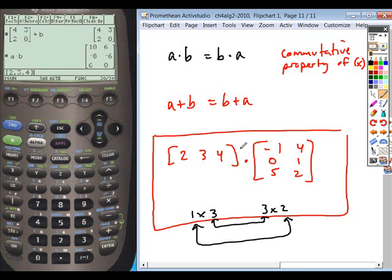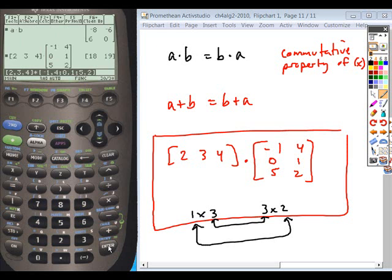Okay, so if we take 2, 3, 4, and we multiply that directly by, and then we list this in matrix form. So negative one, four, zero, one, and five, two. Hit enter. We have our answer of 18, 19 as your solution.